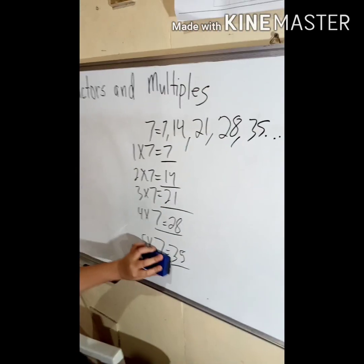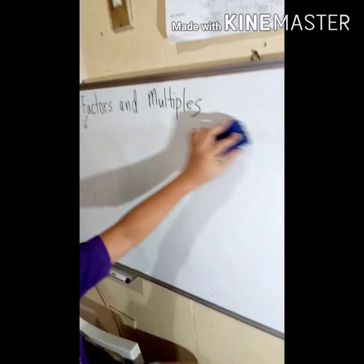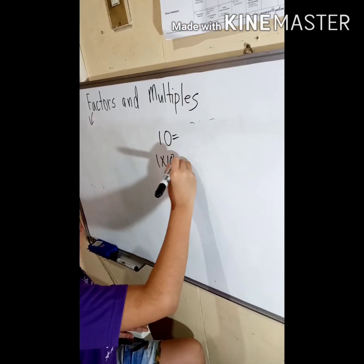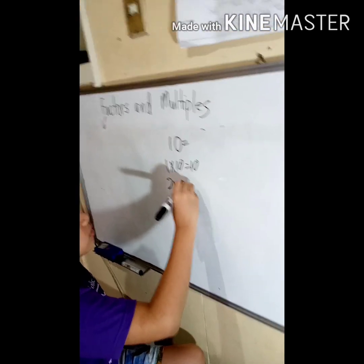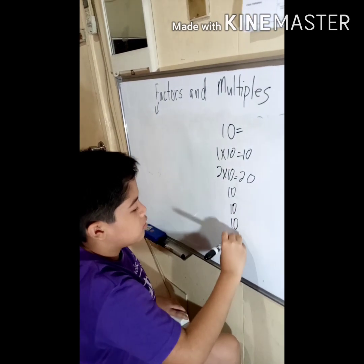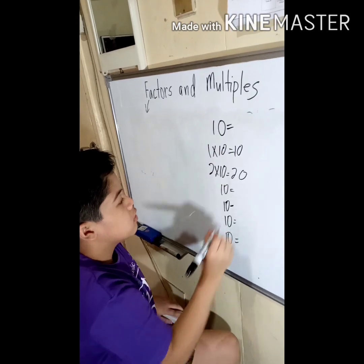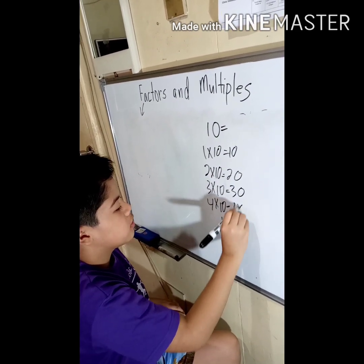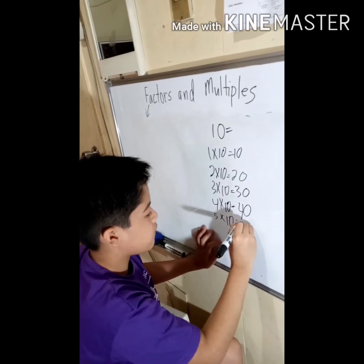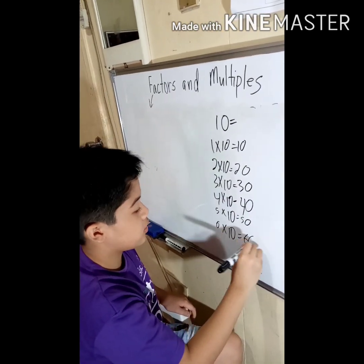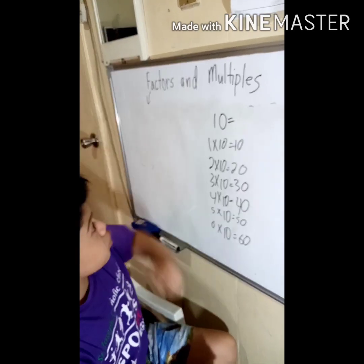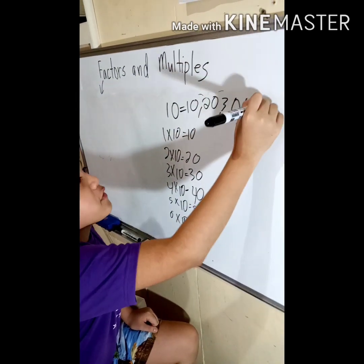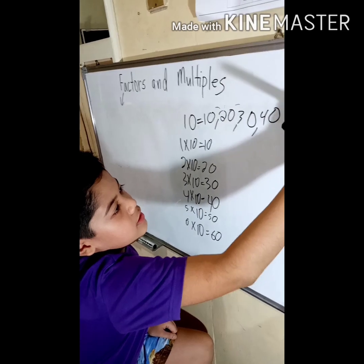Let's get another example — something basic, like 10. The multiples of 10 are: 1 times 10 equals 10, 2 times 10 equals 20, 3 times 10 equals 30, 4 times 10 equals 40, 5 times 10 equals 50, and 6 times 10 equals 60, and it goes on. So the multiples of 10 are 10, 20, 30, 40, 50, 60, and it continues.